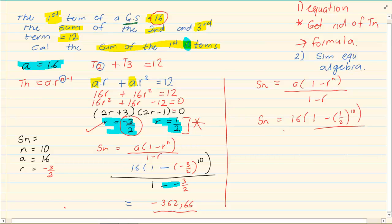So our final answer is 31 comma 97, or if you're leaving it in fraction form, it's 1023 all over 32.